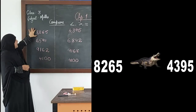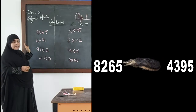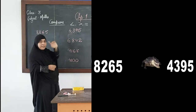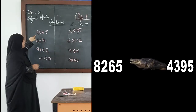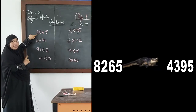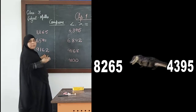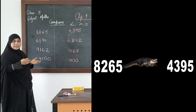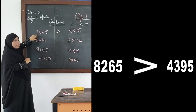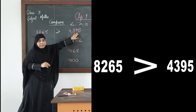The first pair of numbers is 8265 and 4395. When we compare, we should start from the greatest place value, which is the thousands place. We have 8000 and 4000 — which is greater? Of course 8000 is greater. So 8265 is greater than 4395.